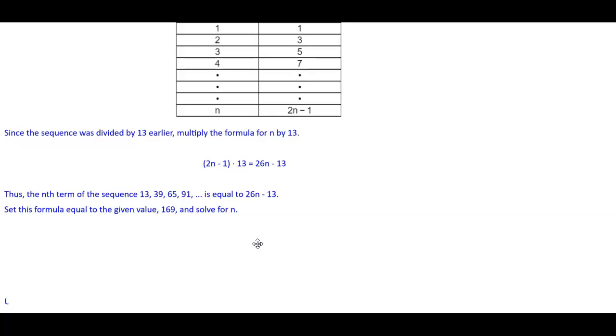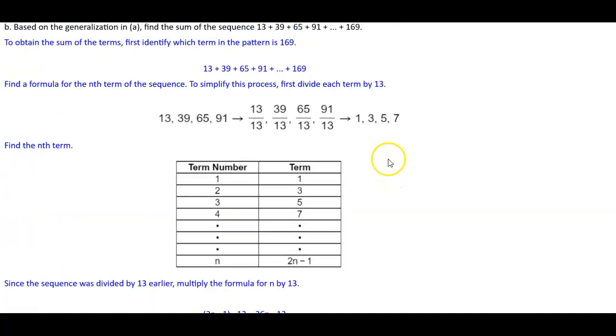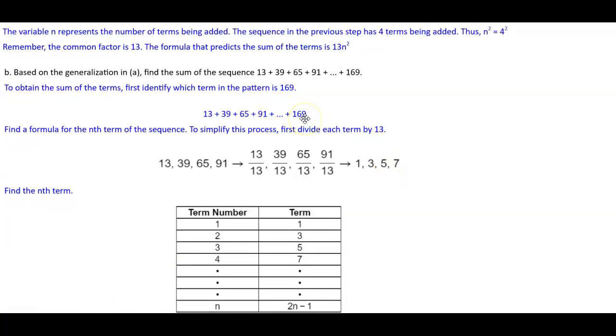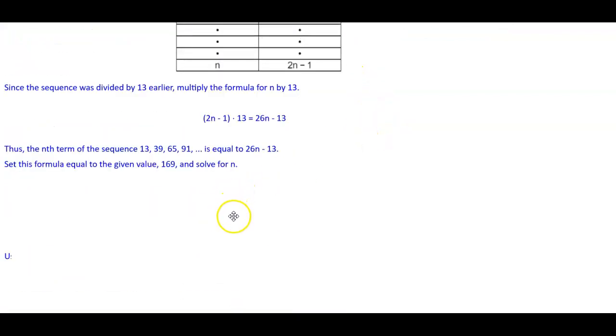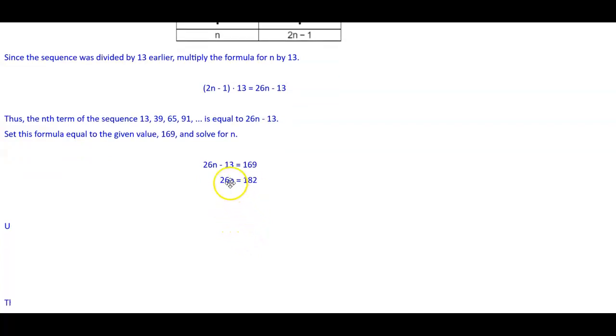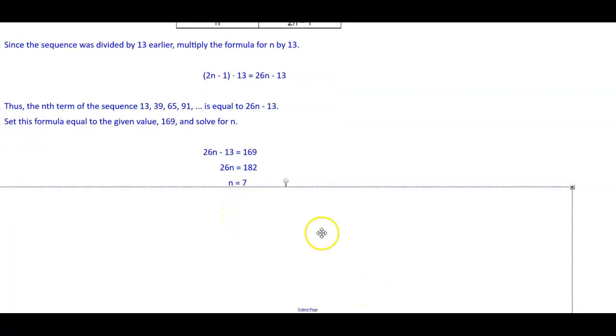Now we want to set this formula equal to the given value of 169, which was the last term in this sequence, so that we can find what n is. We're going to let 26n minus 13 equal 169. We're going to add 13 to both sides, we get 26n equals 182. Then we divide both sides by 26, and therefore n equals 7.